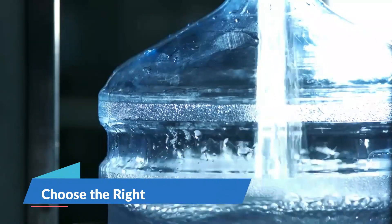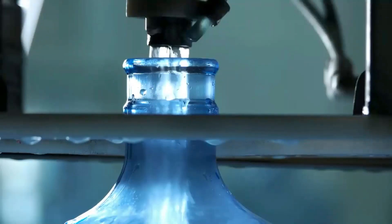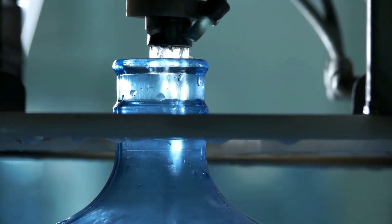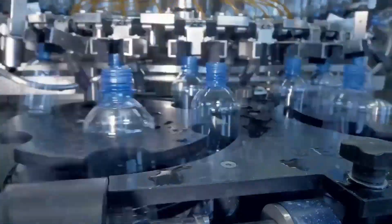How SODIS works. Step 1: Choose the right containers. Use clear, transparent PET plastic bottles or glass containers. The containers should not be colored or cloudy as this can reduce the effectiveness of the sunlight. The size of the container should ideally be 2 liters or smaller because larger volumes of water may not be effectively disinfected.